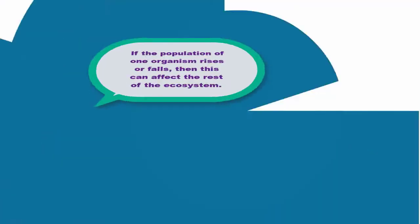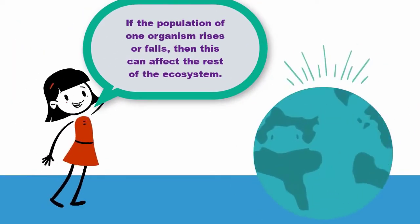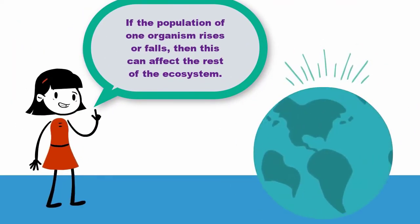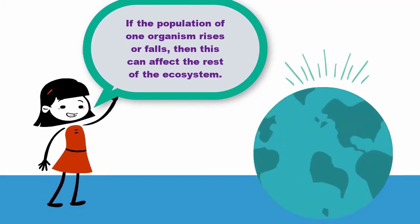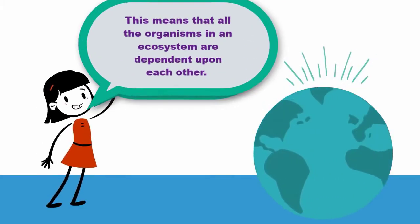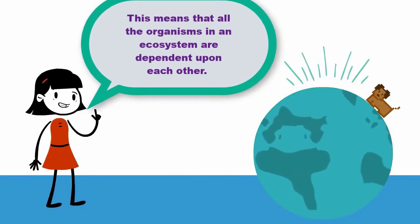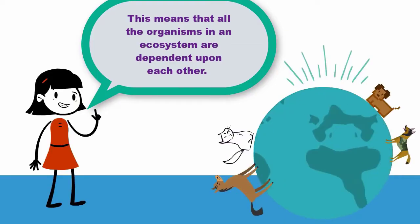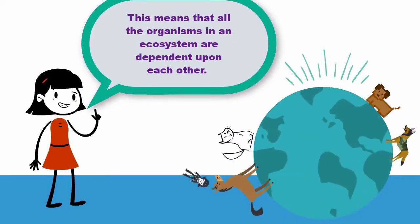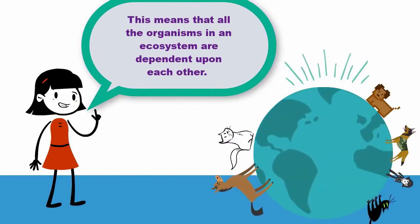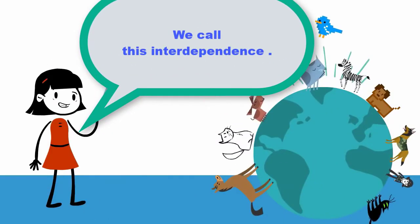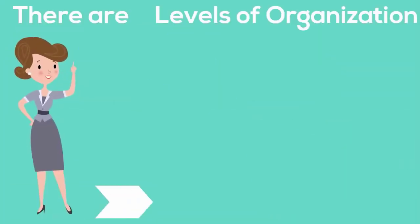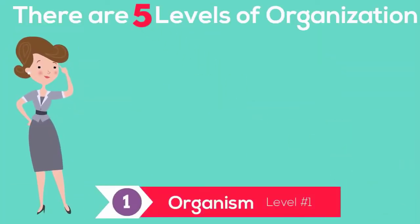If the population of one organism rises or falls, then this can affect the whole rest of the ecosystem. This means that all organisms in an ecosystem are dependent upon each other. This is called interdependence. There are five levels of organization in ecology.